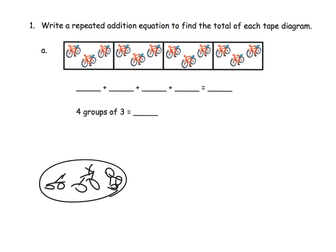The repeated addition is going to look like this: three plus three plus three plus three. If we count, we find that's twelve, and we can see that four groups of three is twelve.